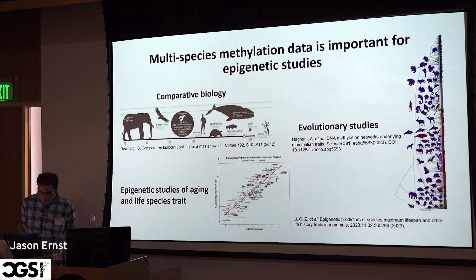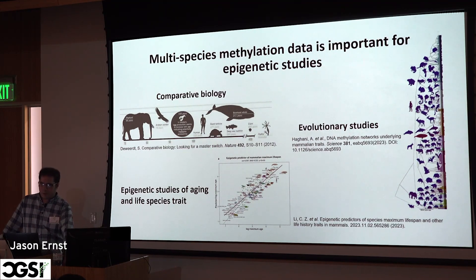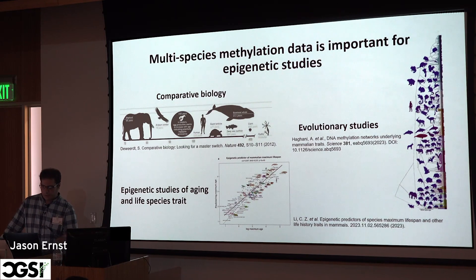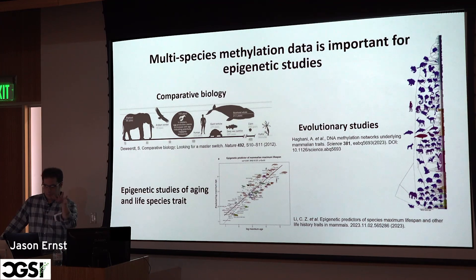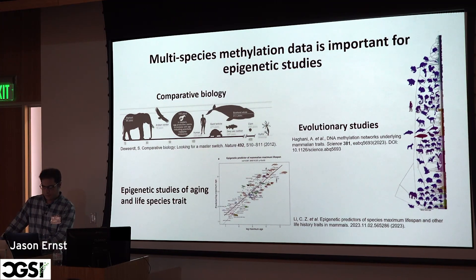There's been a lot of epigenomic profiling of DNA methylation in humans, and now there's interest in mapping it in other species for evolutionary studies, or to look at aging, lifespan, or other species-level traits and how they vary across species.